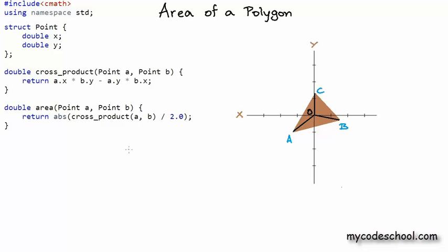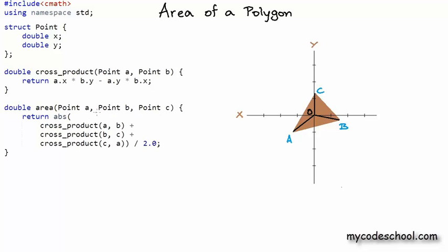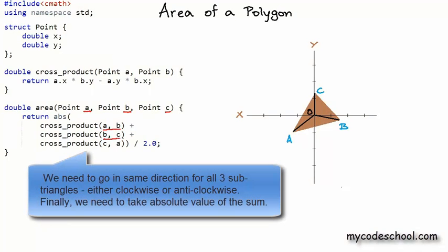So now let's take a look at the code to calculate the area of a triangle given all three points A, B and C. So in this modified function, we now take three points as arguments A, B as well as C and none of them need to be at the origin. We calculate the sum of the triangle OAB, OBC as well as OCA and then we take the absolute value of sum and divide it by two.